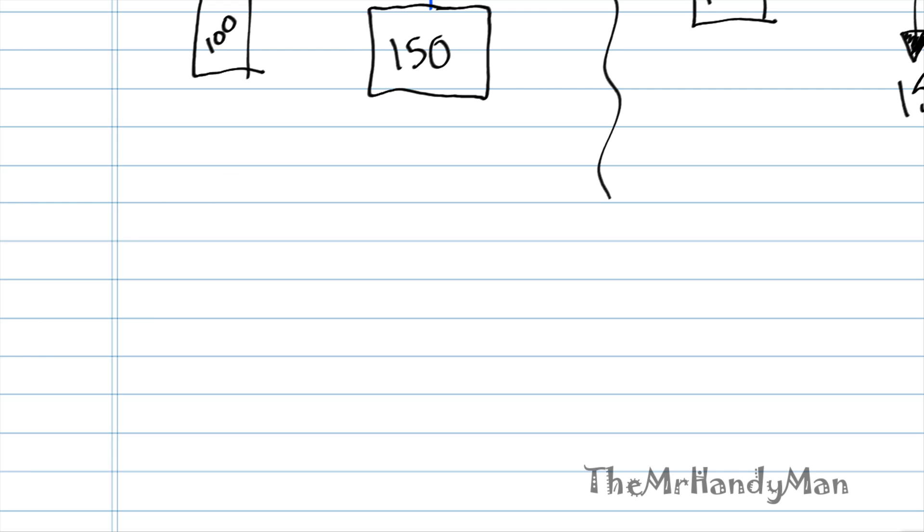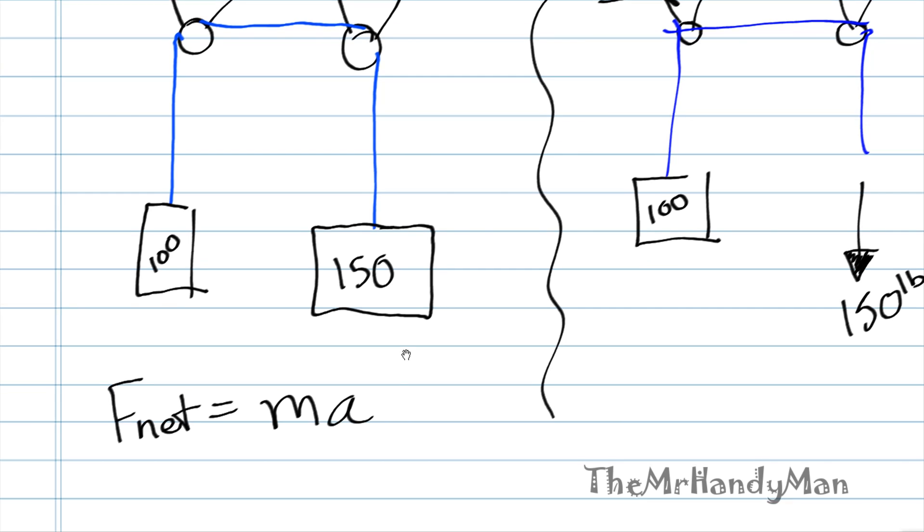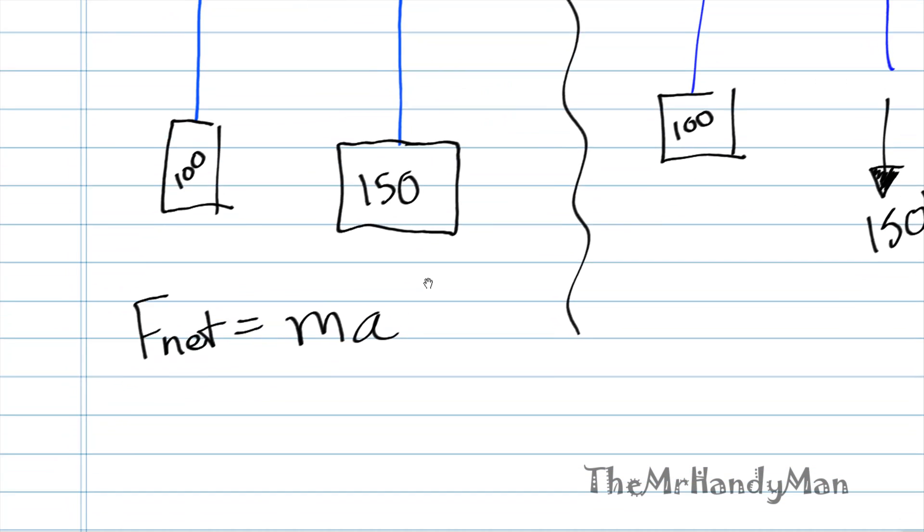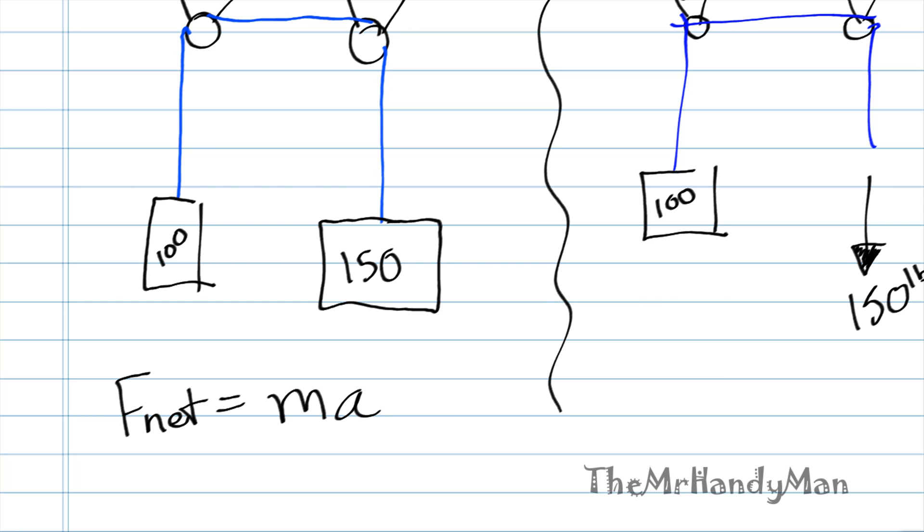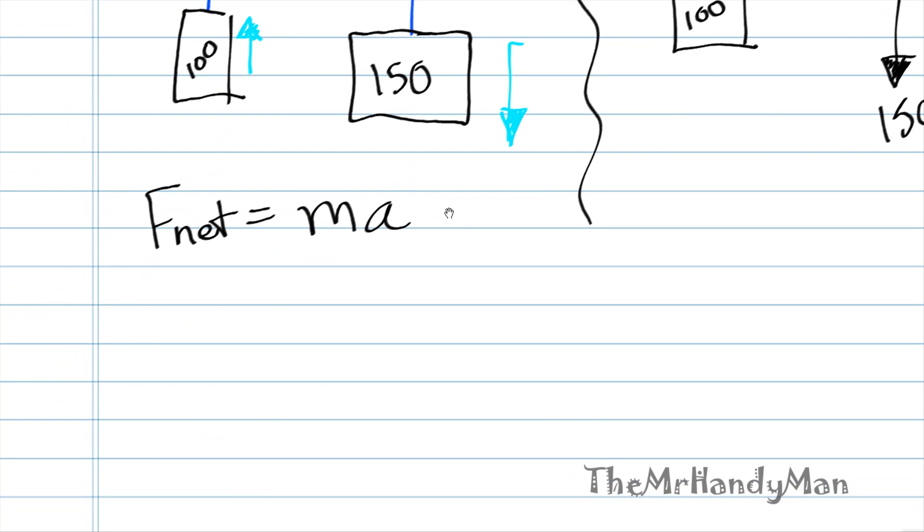Starting off, what we should always remember is that F net equals M A. So if we think about this rope, you can take any point along this line, but we know that the net force, the 100 pounds to the 150, we know that there's going to be a net force of 150 pounds in this direction going down this way, causing this side to move up. We know that the net force is going to be 50 pounds.